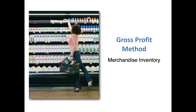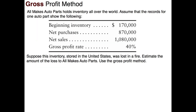So let's look at a small example. Here we have All Makes Auto Parts — they hold inventory all over the world. Assume that the records for one auto part show the following: beginning inventory, net purchases, net sales, and gross profit rate. Suppose this inventory stored in the United States was lost in a fire. We're going to estimate the amount of the loss using the gross profit method.